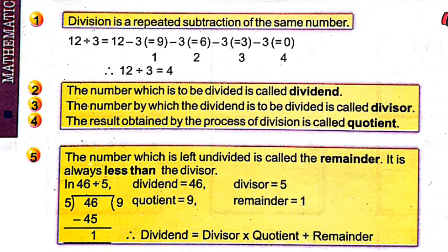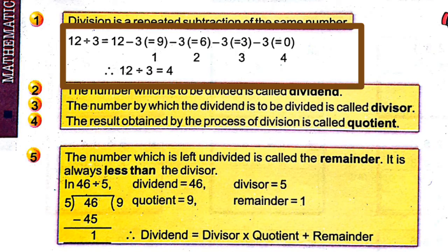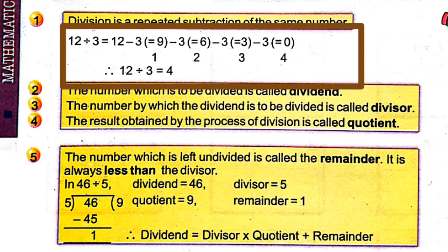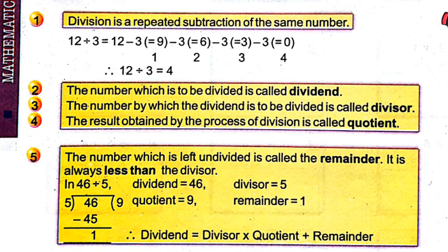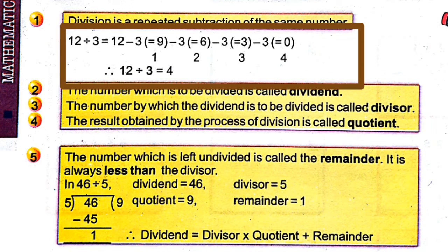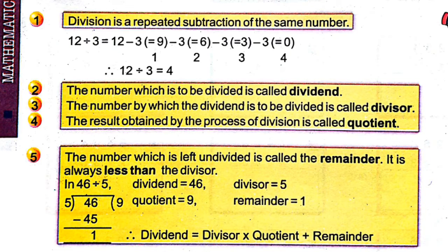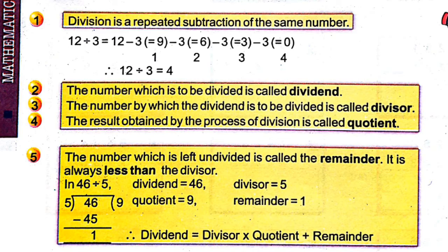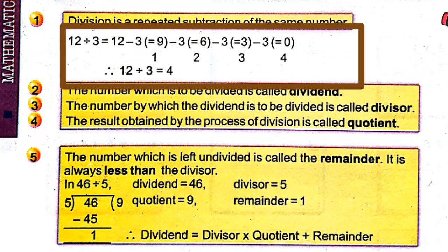See the example: 12 divided by 3. That means we have to subtract 3 from 12, then subtract 3 from the rest, then subtract 3 from the rest again. How many times we have to subtract to get 0? That is the answer. Here, we subtracted 4 times, so the answer is 4. That means 12 divided by 3 is equal to 4.